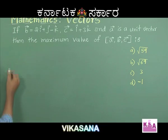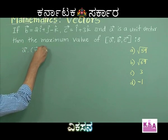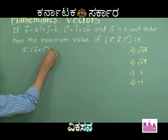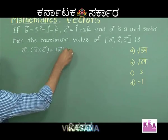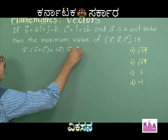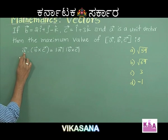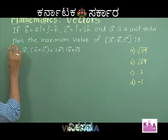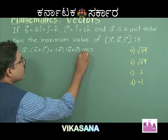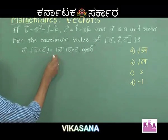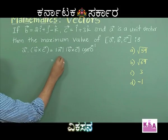The scalar triple product expansion: vector A dot (vector B cross vector C). This dot product will be maximum when the angle between vector A and vector B cross C is zero degrees, so cos(0°) = 1. Since vector A is a unit vector, magnitude of vector A equals 1. Now we need to find the magnitude of vector B cross C.